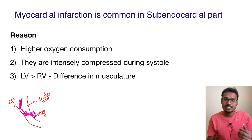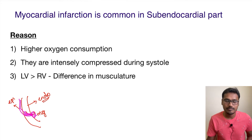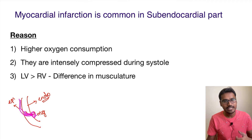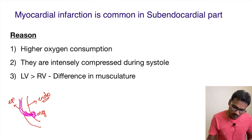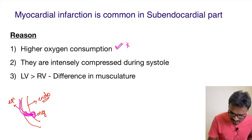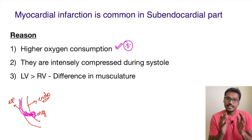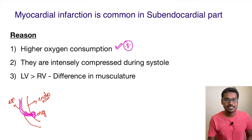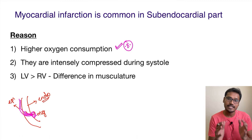This part is going to get a very small amount of blood, so there are more chances for the endocardial part to get myocardial infarction. One more reason is higher oxygen consumption — the endocardial muscle consumes the maximum oxygen because it is working maximally.